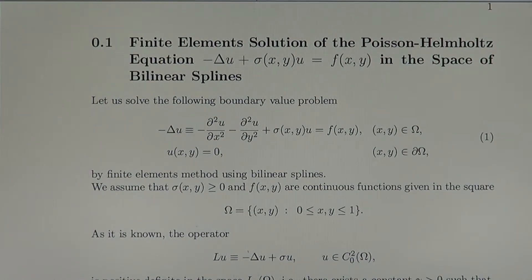Welcome to the next part of the lecture Finite Elements Methods. Today we consider finite elements solution of the Poisson-Helmholtz equation minus Laplacian of u plus sigma u equals f in the space of bilinear splines.